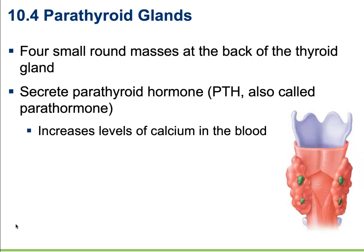Under-secretion of parathyroid hormone — what would happen if we couldn't secrete enough? If we weren't secreting enough parathyroid hormone and our blood calcium levels dropped too low, it could result in nervousness, muscle spasms, and loss of nerve conduction and muscle conduction, because we need calcium to help stimulate our muscles.